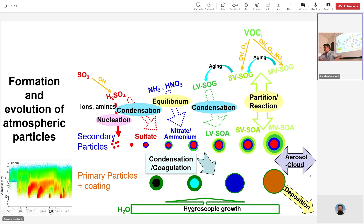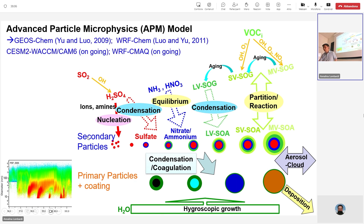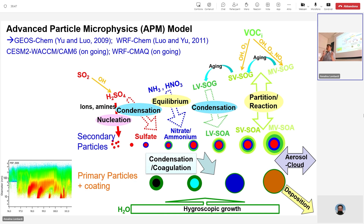To predict aerosol, we have to couple the APM system model to some kind of transport model. In the past we coupled this model to GeoSCAM. We also coupled it to WRF-CAM — WRF has an aerosol model, but we felt it wasn't good enough, so we put our own aerosol model in WRF-CAM. We are also working on coupling to the Earth system model CESM, the NCAR model. We are also teaming up with US EPA — they also want to study ultrafine particles — so we collaborate and put APM into CMAQ, the EPA air quality model, driven by WRF.